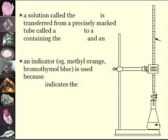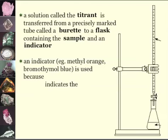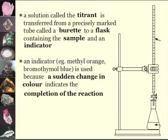This is the setup. A solution called the titrant is transferred from a precisely marked tube called a burette into a flask containing the sample and an indicator. An indicator, for example methyl orange or bromothymol blue, is used because a sudden change in color indicates the completion of reaction.